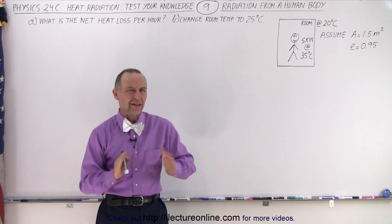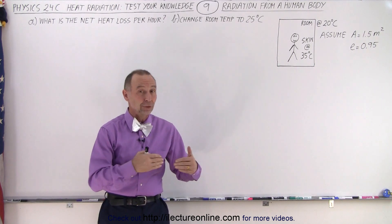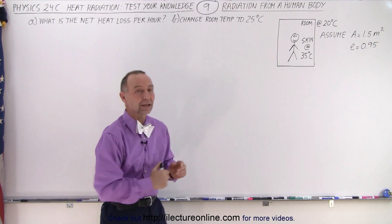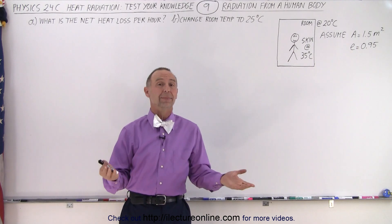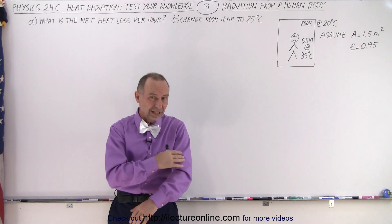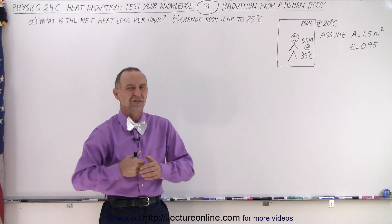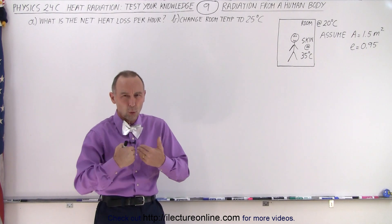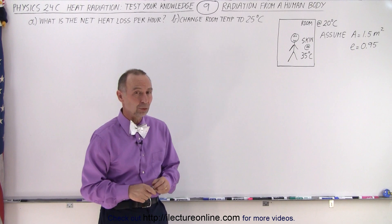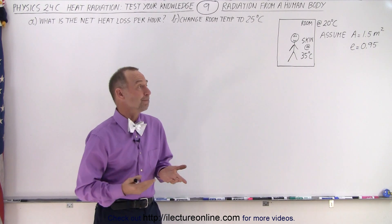Now, if that person is outside at night, you would lose a lot more heat. But what if the person was inside a room which is kept at 20 degrees Celsius, and the skin of the person is at about 35 degrees Celsius — the body core is probably at 37, but the skin is a little bit cooler. So how much heat loss would there be?